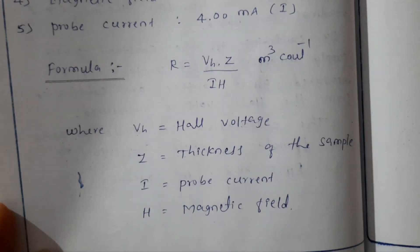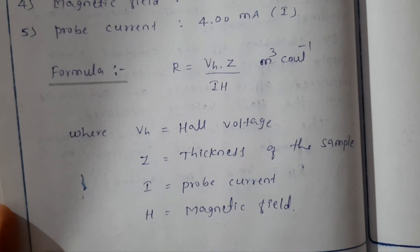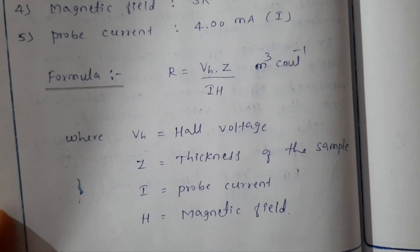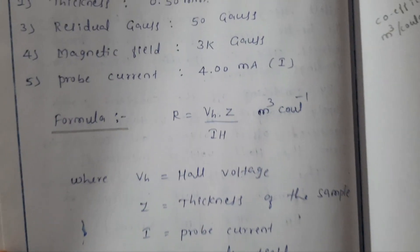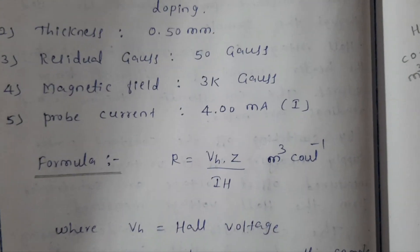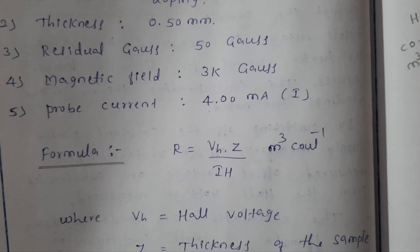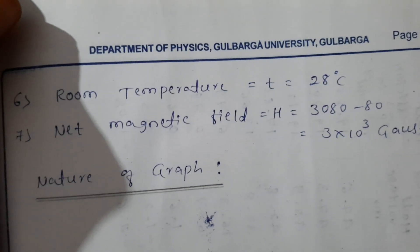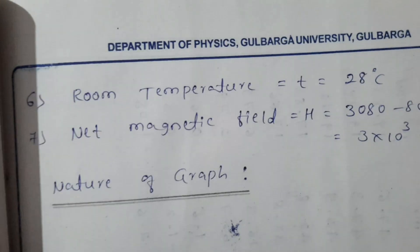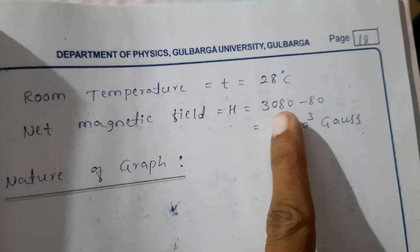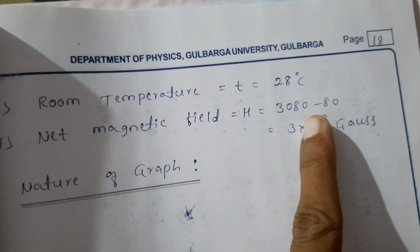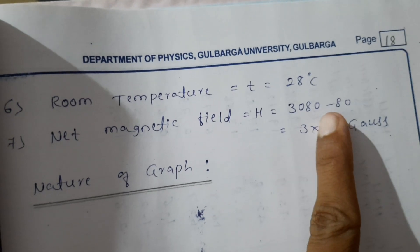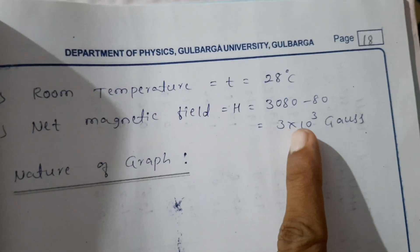VH is Hall voltage, Z is the thickness of the sample, I is the probe current, and H is the magnetic field. The unit for Hall coefficient is meter cubed per coulomb. Room temperature T is equal to 28 degree Celsius. Net magnetic field is 3080 minus 80 Gauss, that is 3 into 10 to the power 3 Gauss.